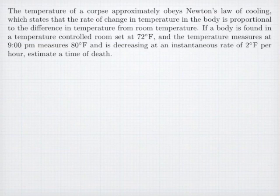If a body is found in a temperature controlled room set at 72 degrees Fahrenheit and the temperature measures at 9 o'clock pm measures 80 degrees Fahrenheit and is decreasing at an instantaneous rate of 2 degrees Fahrenheit per hour, estimate a time of death.